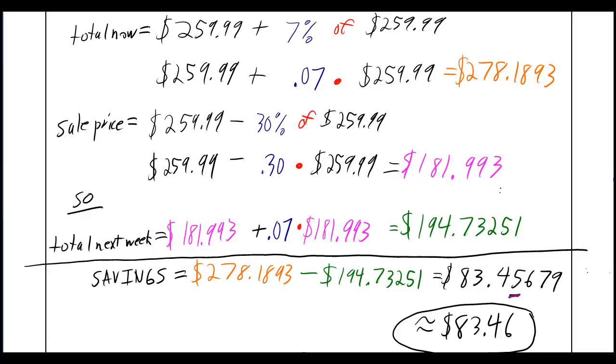Be careful that you don't add the tax first. You're only going to get taxed on the amount you give the store. Then take the total now minus the total next week and subtract. That gives you $83.45679.